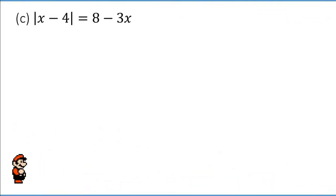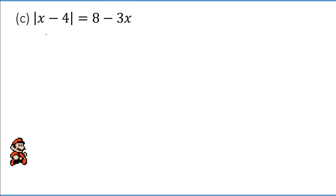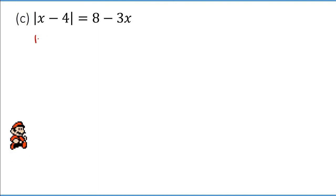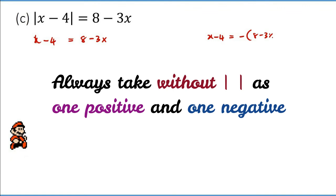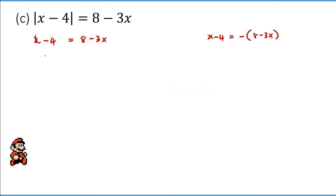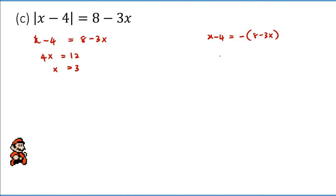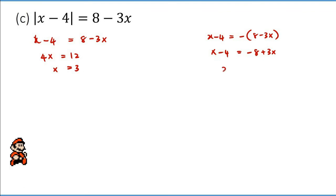For the next example, we use the basic definition because there is a modulus on one side only. We rewrite x minus 4 unchanged for the positive case, and negative of 8 minus 3x for the negative case. Solving the first case gives 4x equals 12, so x equals 3. Solving the second case gives x minus 4 equals negative 8 plus 3x.